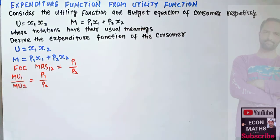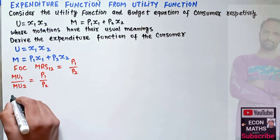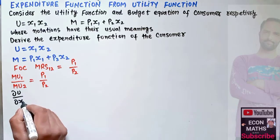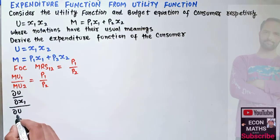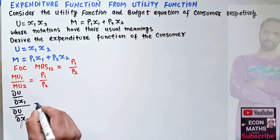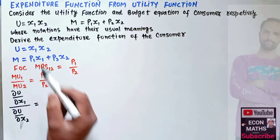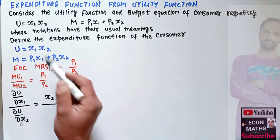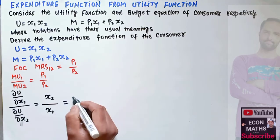The marginal rate of substitution is MU1 upon MU2, equal to p1 upon p2. The marginal utility of x1 is the partial derivative of the utility function with respect to x1, and MU2 is the partial derivative with respect to x2. So du/dx1 gives us x2, and du/dx2 gives us x1, meaning x2/x1 = p1/p2.